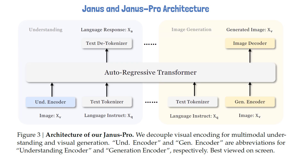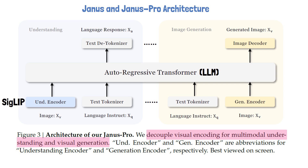At the core of the model, we have an autoregressive transformer, which is a large language model. The main design principle in the Janus architecture is to decouple visual encoding for multimodal understanding and generation. This is achieved by utilizing different encoders for each type of task. Other models that unify multimodal understanding and generation typically use a single image encoder. However, because the encodings needed for each type of task are different, this approach often suffers from task interference, which Janus avoids. For image understanding tasks, Janus uses SigLIP to encode images, which is an improved version of OpenAI's CLIP model that extracts semantic representations from images, making it suitable for understanding tasks.